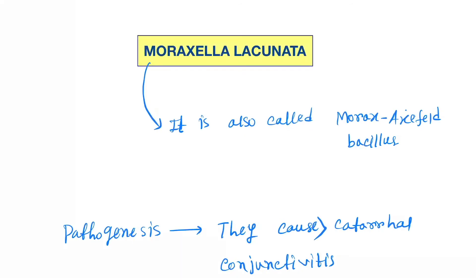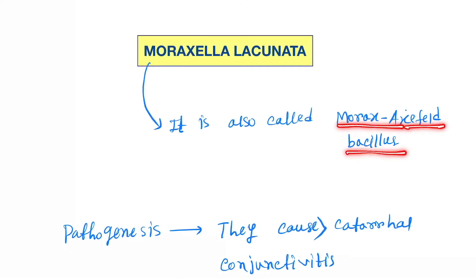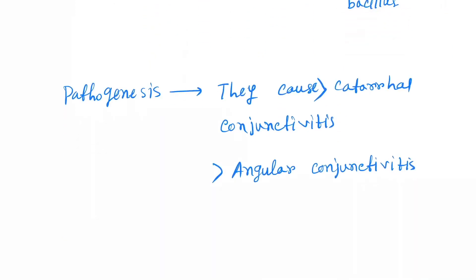Next is Moraxella lacunata. It is also called Morax-Axenfeld bacillus. Pathogenesis: they cause catarrhal conjunctivitis and angular conjunctivitis.